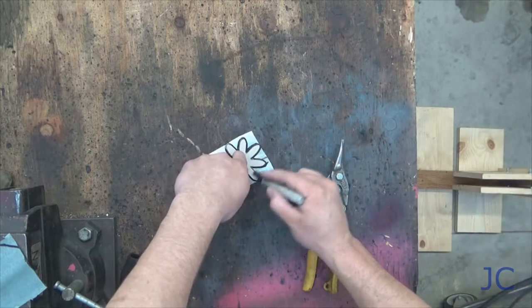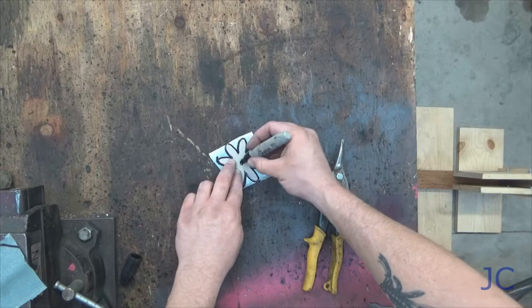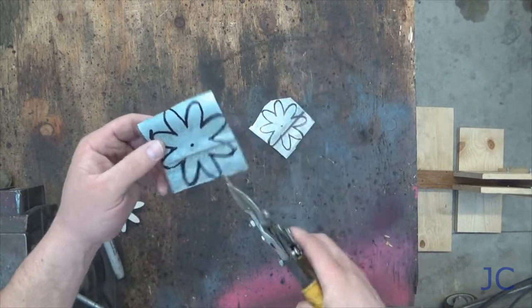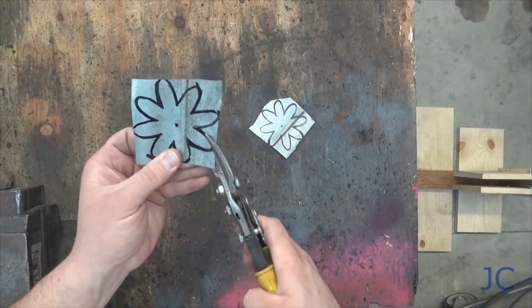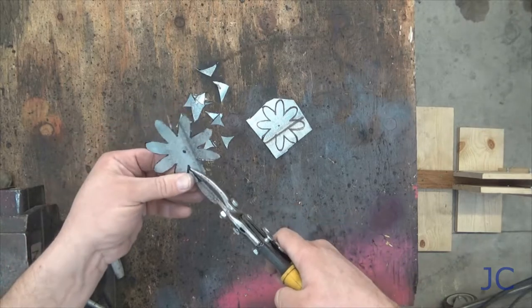The metal we're using to make the petals and the leaves is very thin sheet metal that I got from a tin roof. Anything thin and flexible can work for this. You're going to use tin snips to cut the petals out and the leaves.